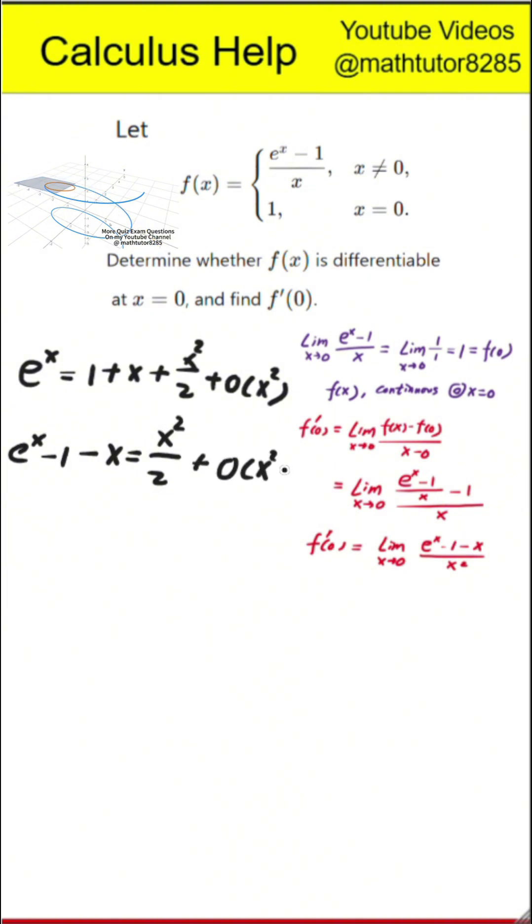If we subtract 1 and then subtract x, what remains is approximately x squared over 2 plus smaller terms. Dividing that by x squared gives 1 half in the limit.